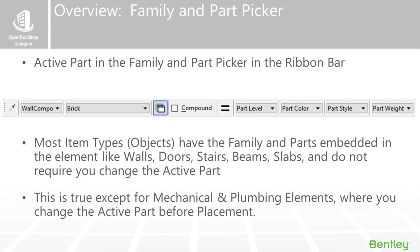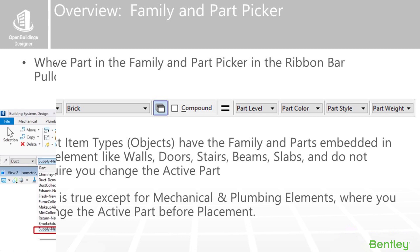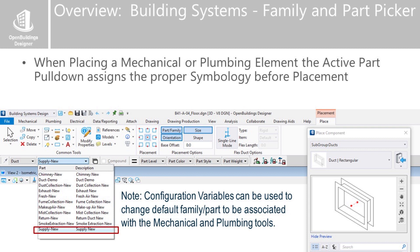Within these objects, parts define the symbology. Those objects do not require you to use the pull-down, but mechanical and plumbing elements do require a pull-down when selecting a duct or pipe. From the ribbon bar when you select a duct, you'll see placement tool options: the size, family, part, and whether it's single line or double line. From the pull-down you choose whether it's a supply duct or return duct, which puts it on the correct color and line style in the model. You also have the ability to change what it will look like in the drawing. Configuration variables set the defaults for which tool option is selected — that's unique to some of our building tools.